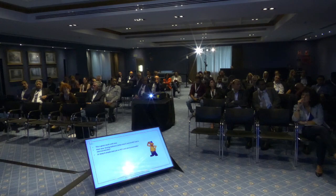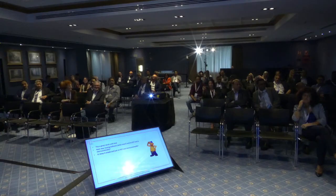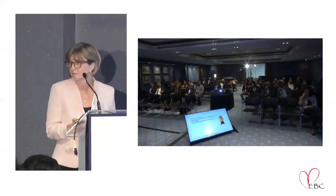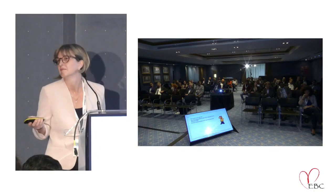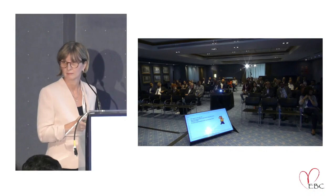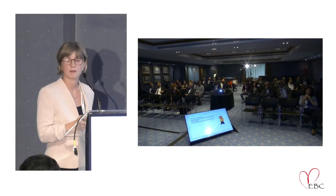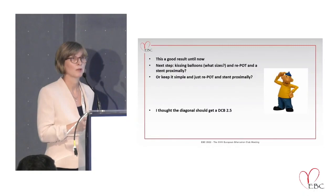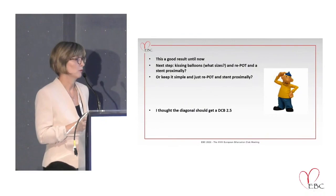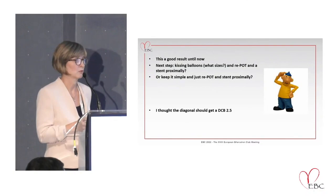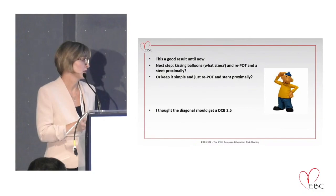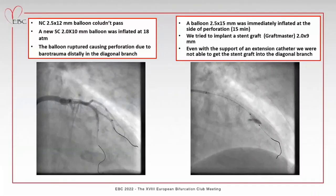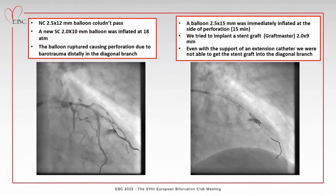Sometimes you create a conclusion to do a systematic POT. I thought it could be better since the diagonal is a bigger branch - I would like to use a DCB. So I went with a non-compliant 2.5mm balloon to pre-dilate, then use the DCB, then rePOT and stent the proximal LAD. I tried to go with a 2.5 x 12mm non-compliant balloon but it couldn't pass, so I used a smaller semi-compliant balloon inflated at 18 atmospheres.